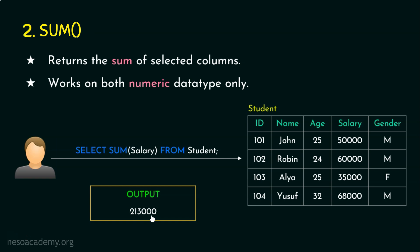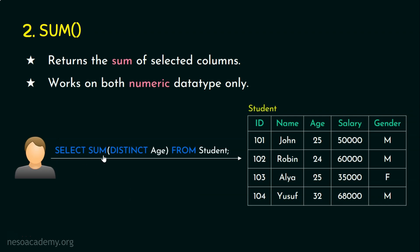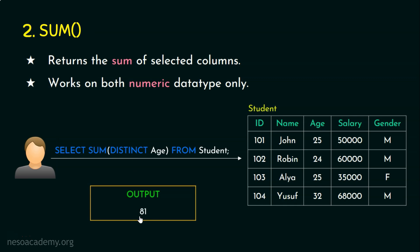You may ask: will it take distinct values or all values? Since we did not give any DISTINCT keyword, it takes all values. In case the user wants the summation of distinct values only, the query should be: SELECT SUM(DISTINCT age) FROM student. Without DISTINCT, adding all age values — 25 + 24 + 25 + 32 — gives 106. But with DISTINCT, it takes 25, 24, and 32, skipping the repeated 25. So the answer is 25 + 24 + 32 = 81.